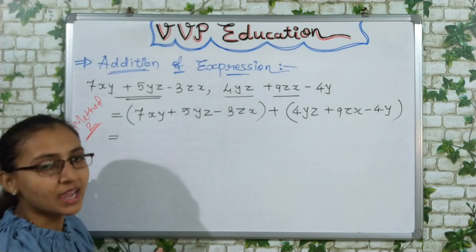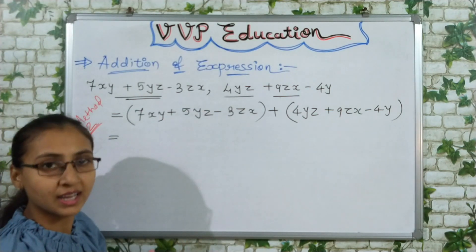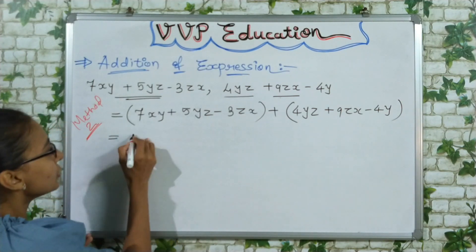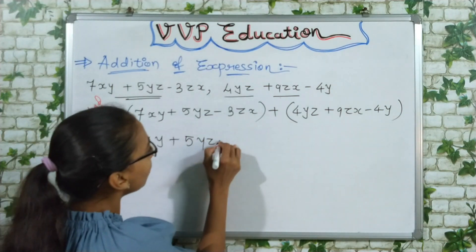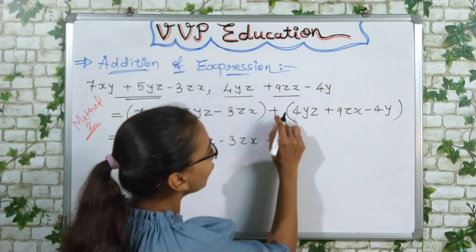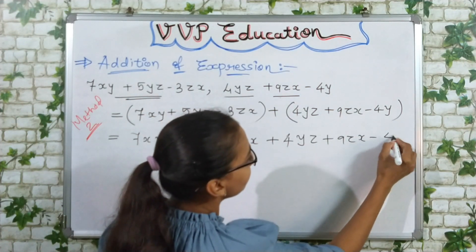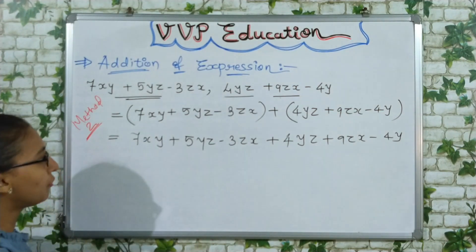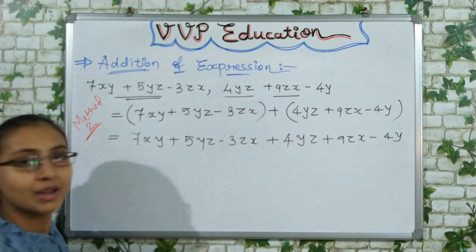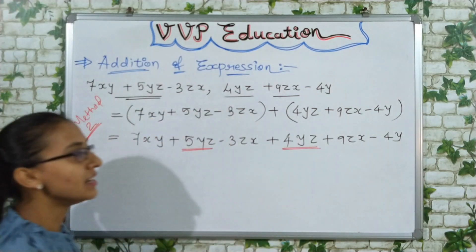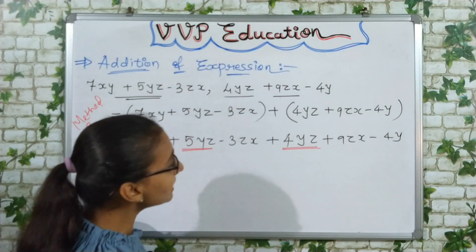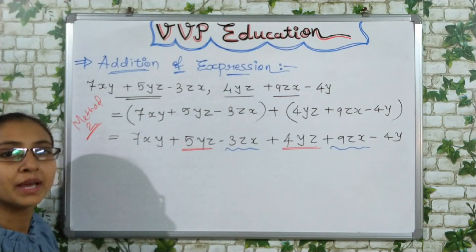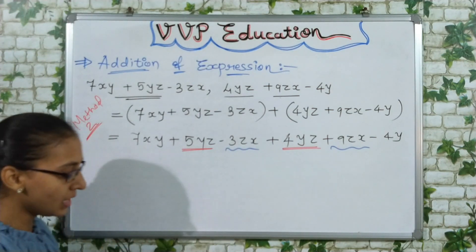Whenever there is addition or subtraction, we must first put expressions in brackets — this is most important. It may not matter much for addition, but it makes a big difference for subtraction. So we develop the habit of using brackets from the start. After removing brackets, I write all terms as they are: plus sign appears before 4yz. Now I identify like terms: 5yz and 4yz are like terms, and minus 3zx and 9zx are like terms. Minus 4y has no like term.